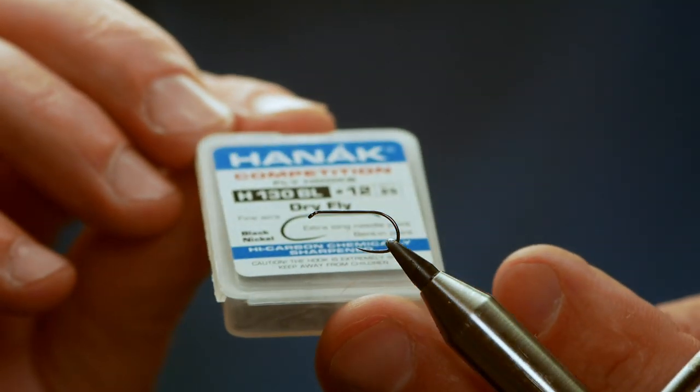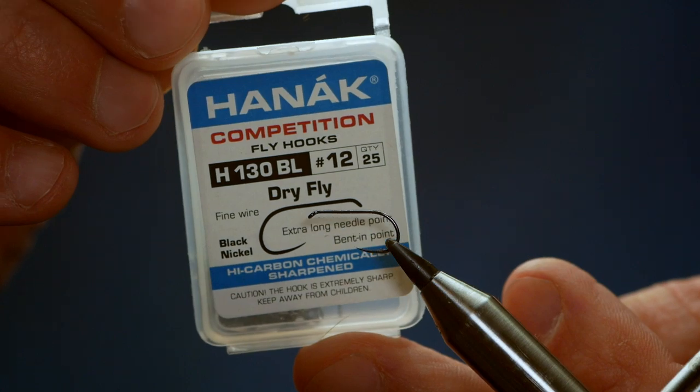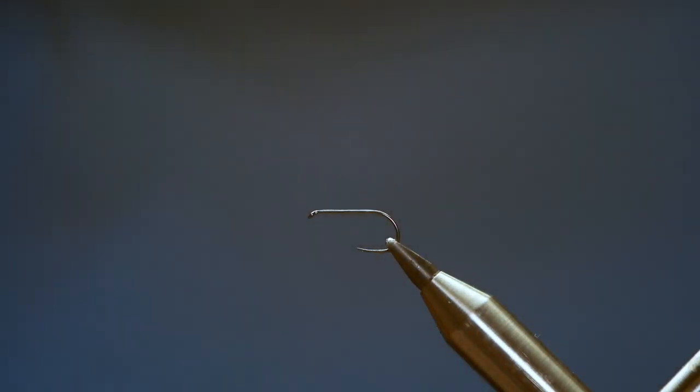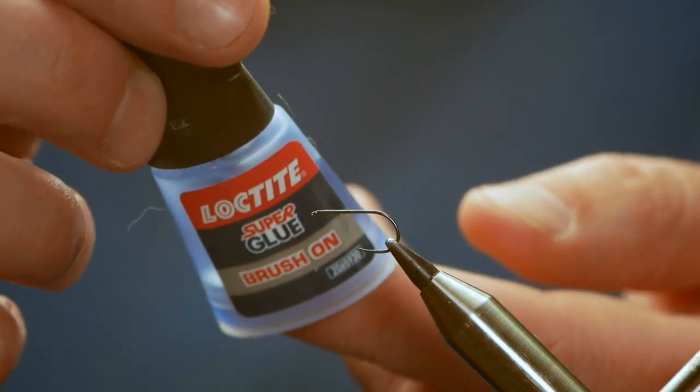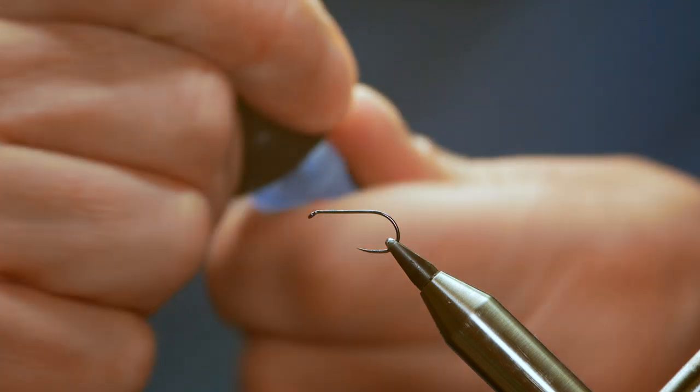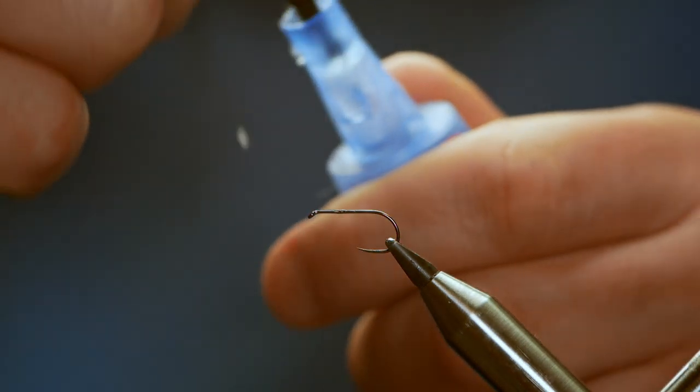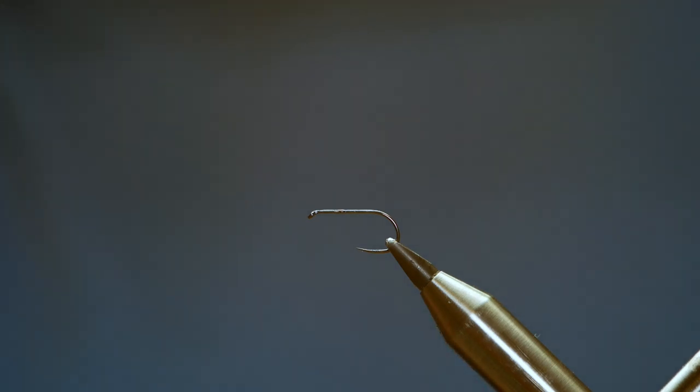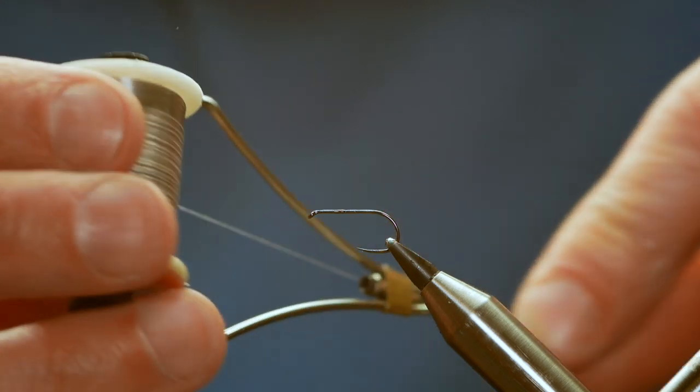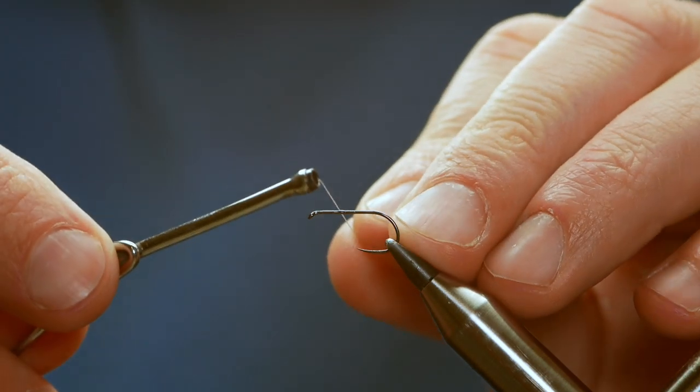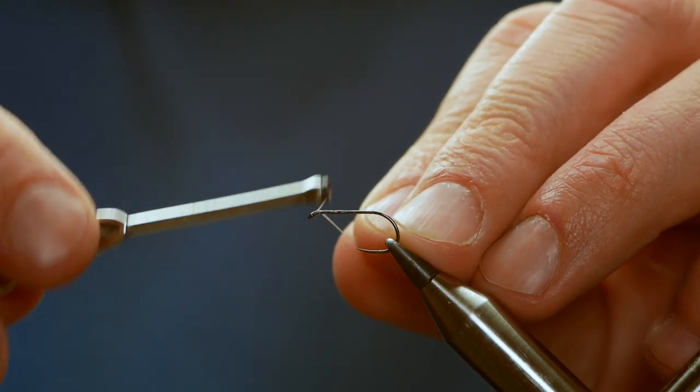In the vise is a Hanak H130 barbless hook at size 12, although I do tie this fly in size 10s and 14s as well. First thing I'm going to do is put a little dot of super glue on the shank of the hook as the thread I'm going to be using today is the Fish On Ultimate Tine Silk in steel grey color, but I'm going to change the color with a marker pen when the time comes.